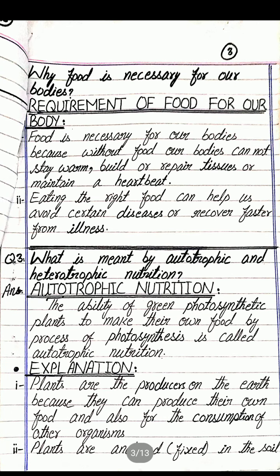The next question is: why is food necessary for our bodies? Food is very much necessary because without food no one can survive. Our body needs to stay warm, build or repair tissues damaged by diseases, and maintain a proper heartbeat. To maintain all these things, we need to eat the right amount, quality, and quantity of food that can help us avoid certain diseases and recover faster from illnesses.